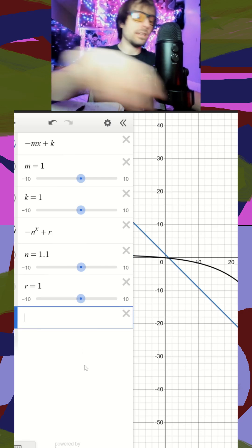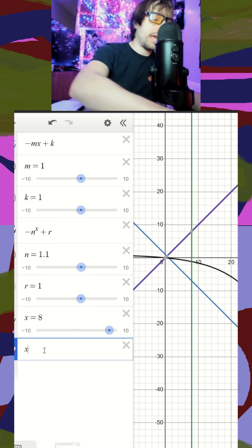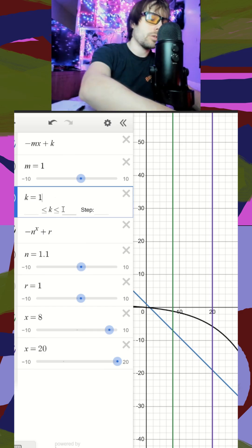The final touch is going to be these should have equal Y values when my X is 8, and when my X is 20. So, I want to drag these way up because I want to be dealing with positive numbers, so K is going to be our Y intercept here. Let's go ahead and make that like 40.